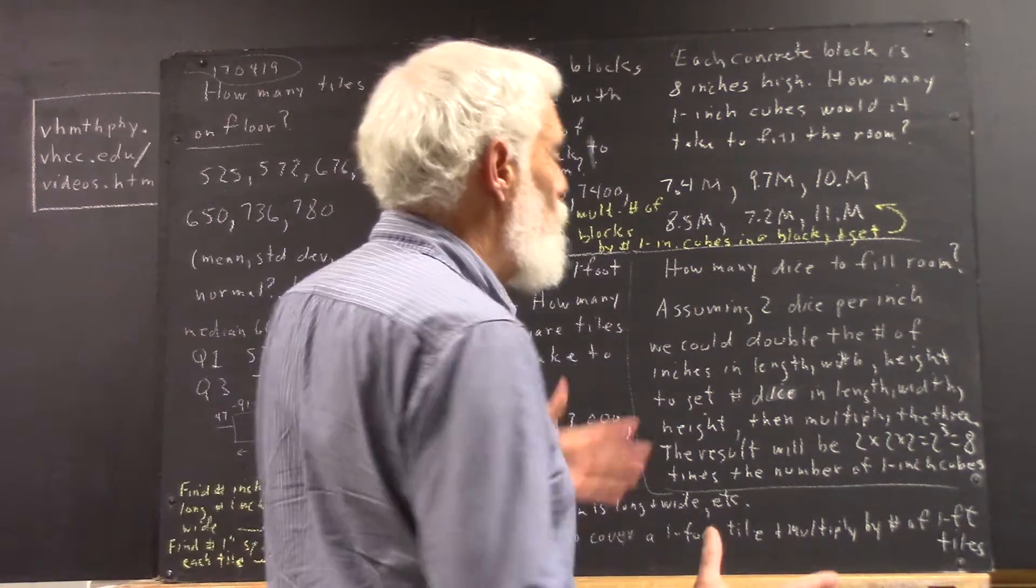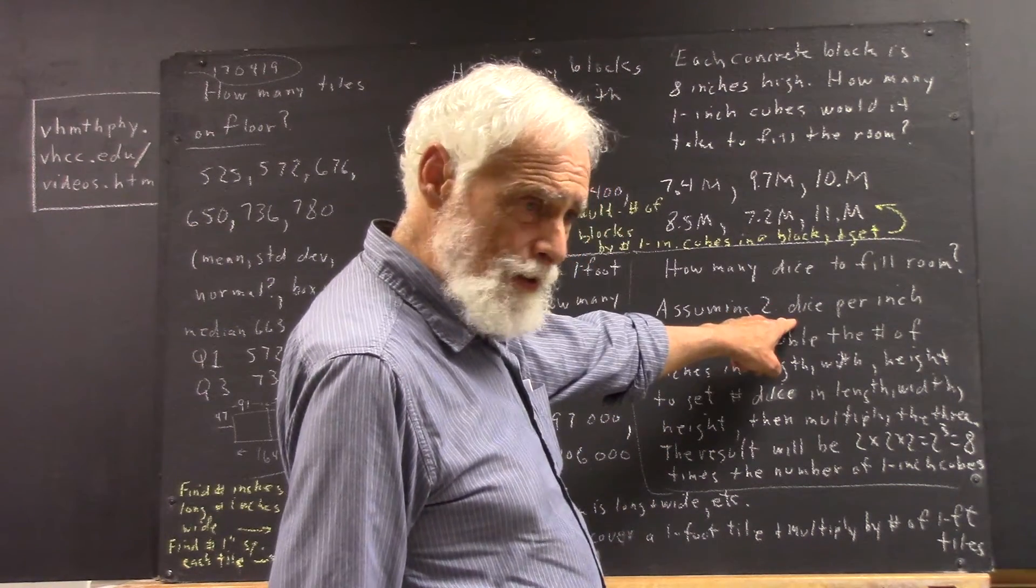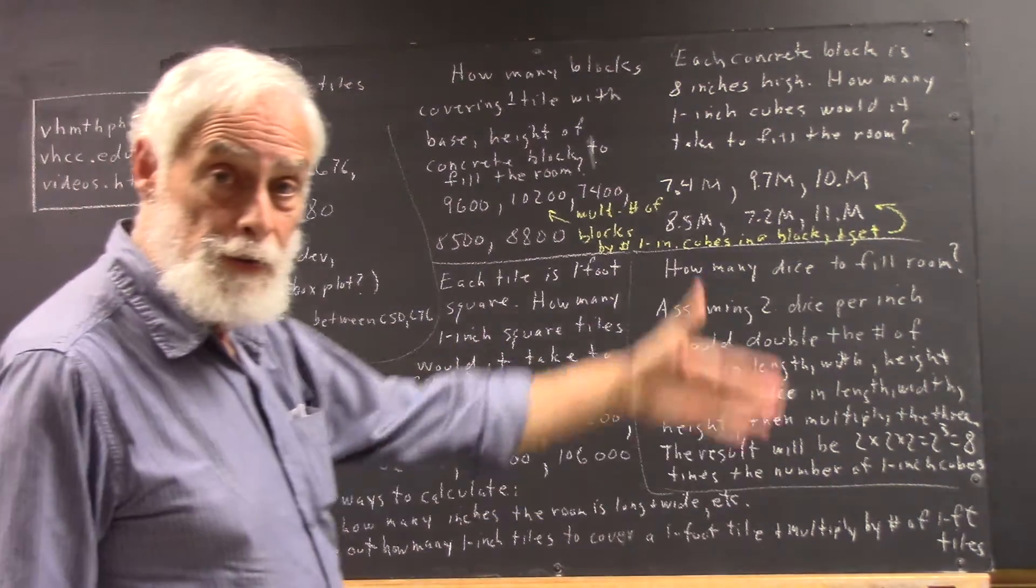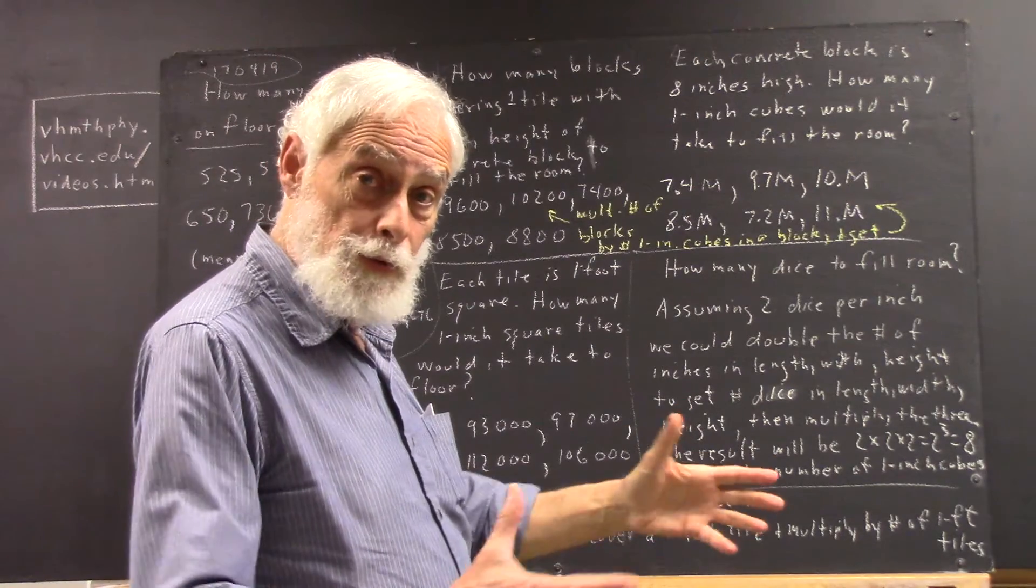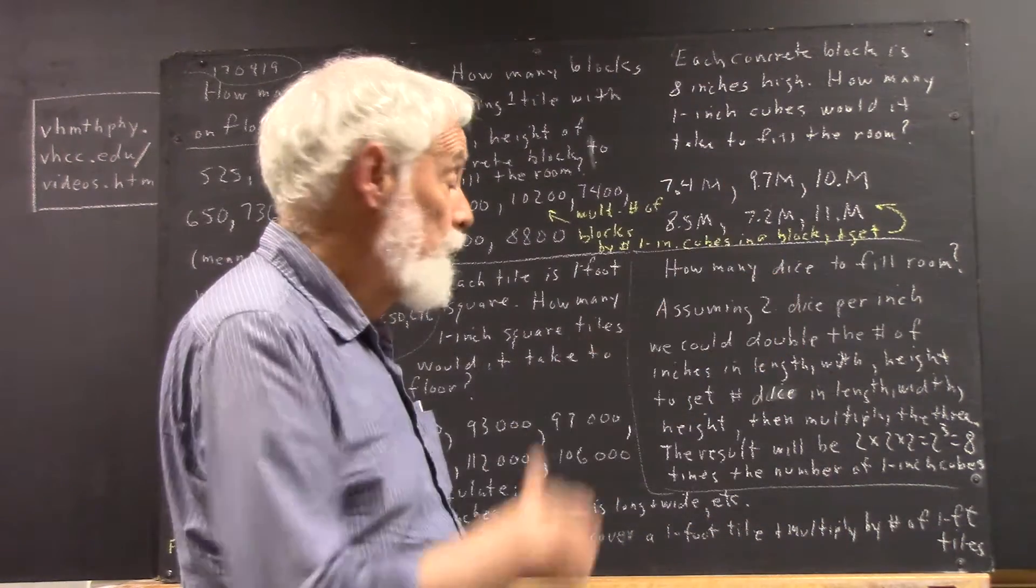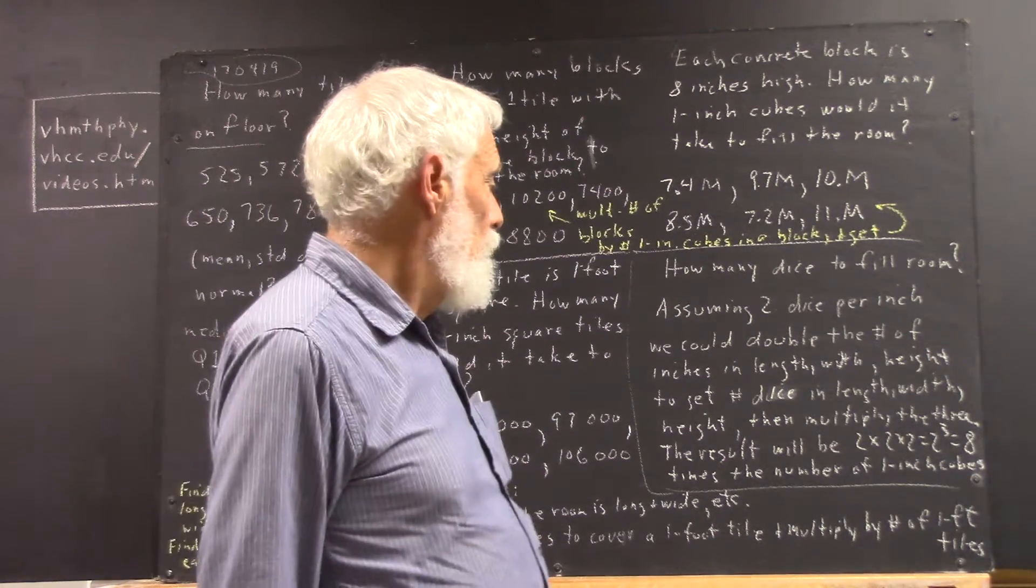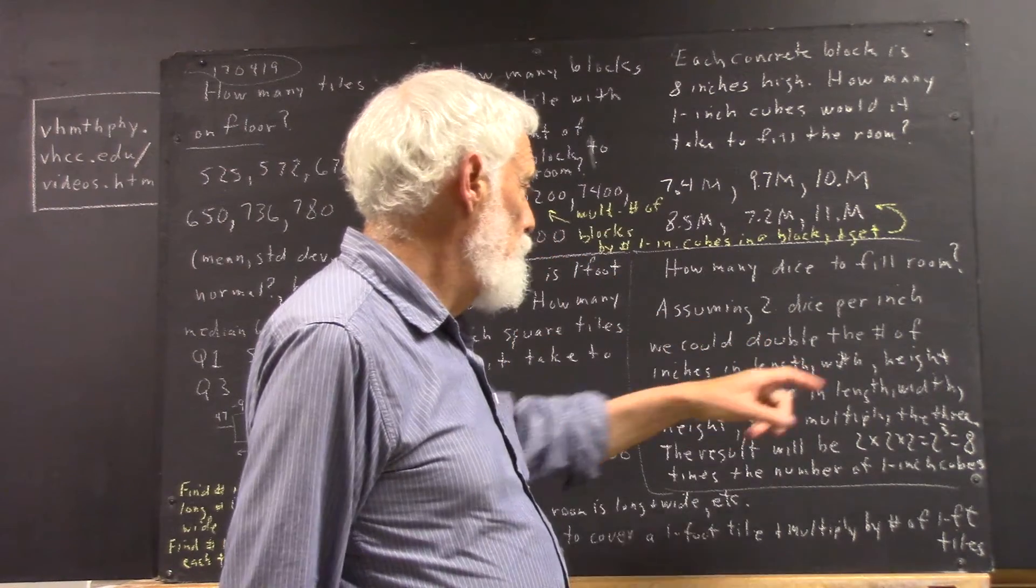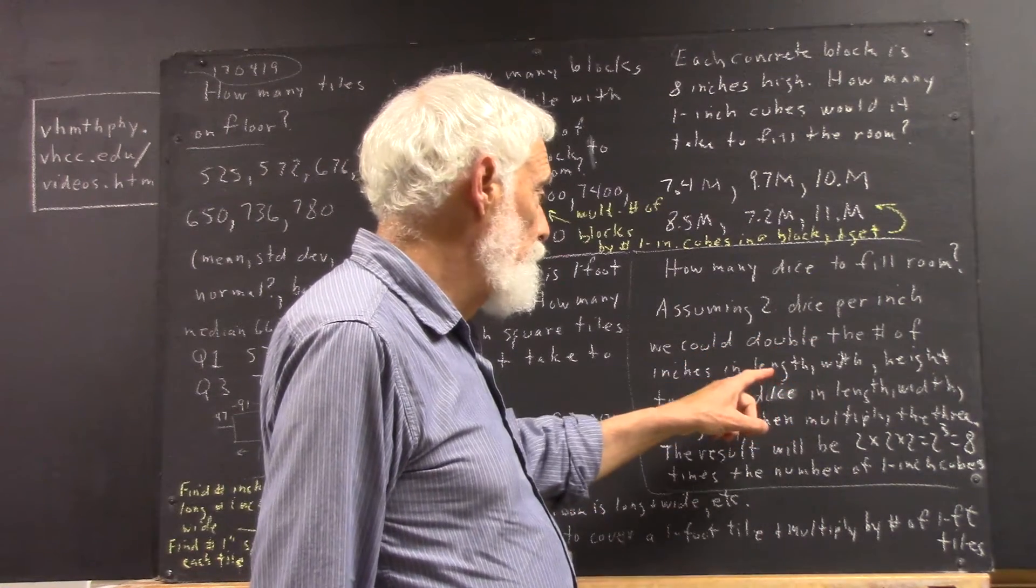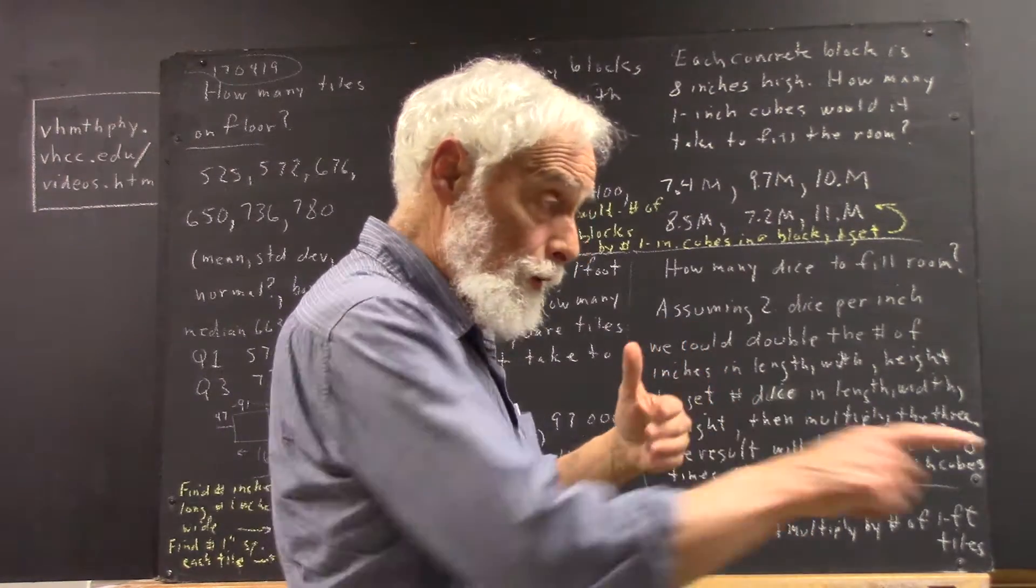Well, it turns out then, one thing we could do is we could say, if there are two dice per inch, then if we know how many inches the room is long and how many inches it is wide and how many inches it is high, we just double each of those and we have how many dice it would take to run the length of the room, the width of the room, and the height of the room, and then we could multiply those three numbers.